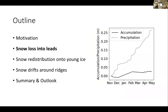A quick roadmap: I've hopefully convinced you that we should care about the missing snow from Arctic sea ice. In the next three sections, I'll talk about three hypotheses for where the snow might have gone: snow lost into leads, snow redistribution onto young ice, and snow drifts around ridges. Finally, I'll provide a summary and brief outlook, and hopefully leave plenty of time for questions.